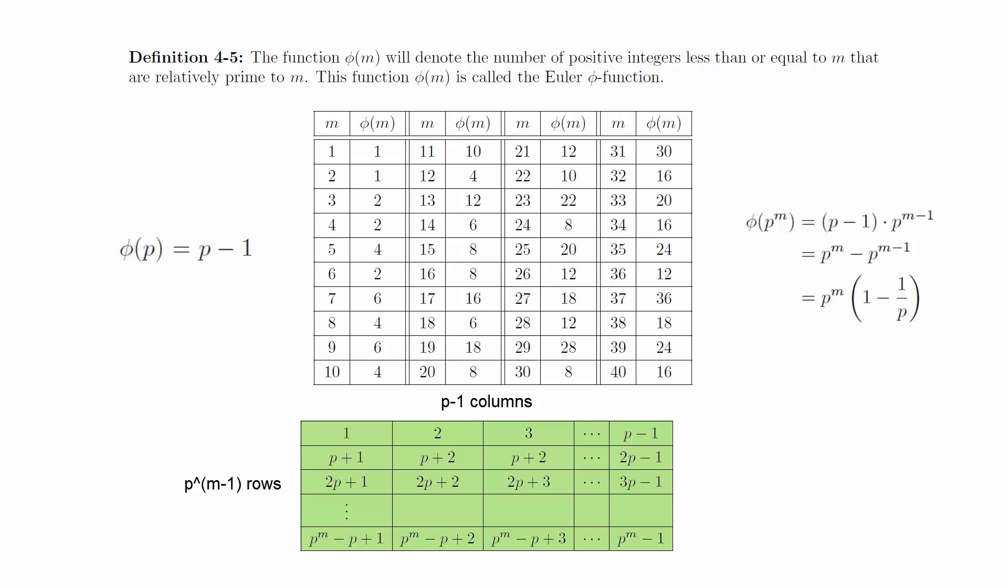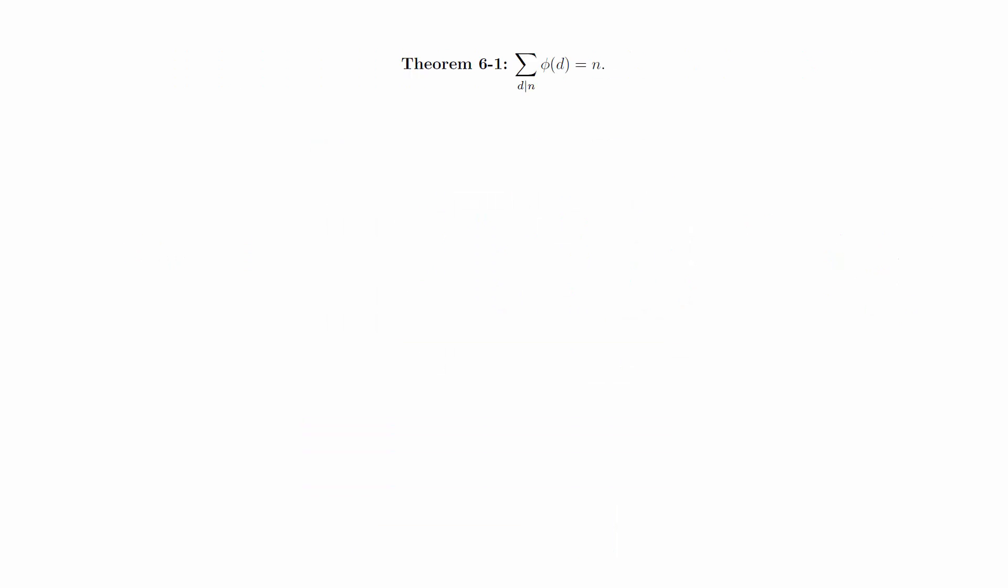We will derive a general formula for phi of n in an indirect manner that highlights some of the interesting techniques that can be applied to problems involving arithmetic functions. We will start off with a somewhat surprising theorem. Theorem: the sum of phi of d, where d divides n, is equal to n.